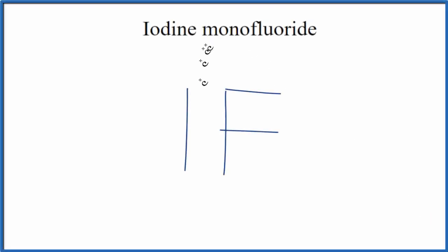In this video, we'll draw the Lewis structure for iodine monofluoride, that's I-F. So the first thing we need to do is count the valence electrons up.